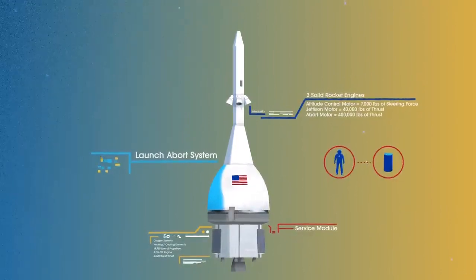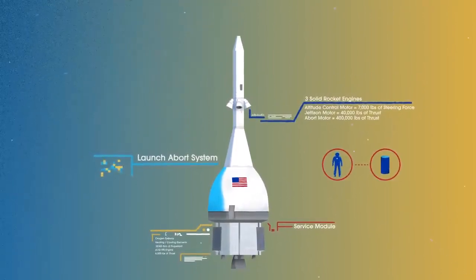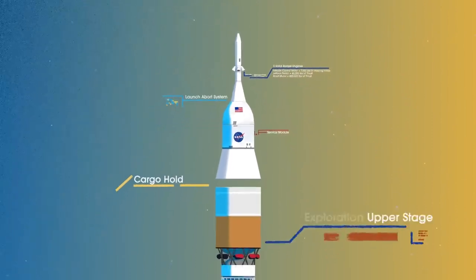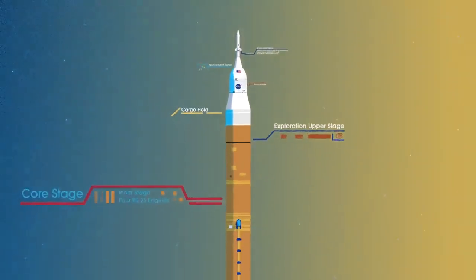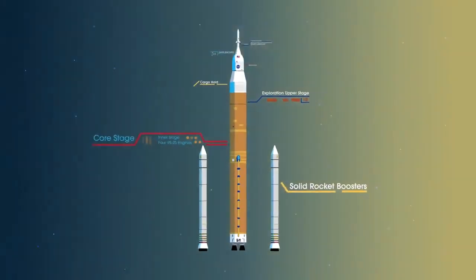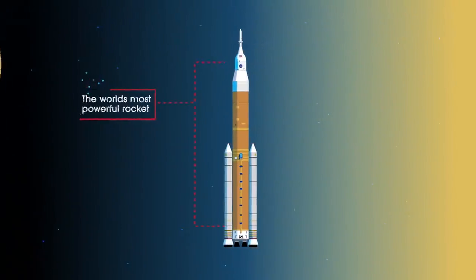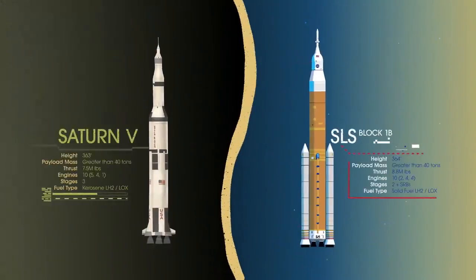To accomplish the task of launching our crew and heavy payloads, NASA is building the Space Launch System, comprising of a cargo hold, an exploration upper stage, a massive core stage, and two extended solid rocket boosters. Altogether, this is the world's most powerful rocket, and it exceeds the legendary Saturn V of the Apollo era in numerous ways.